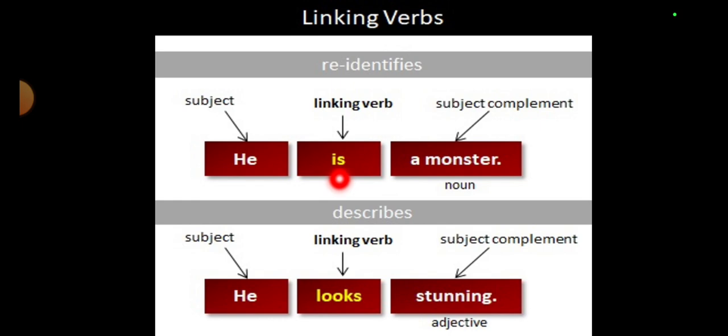Some linking verbs look like action verbs and have three forms, like: looks, looked, looked, looking. For example: 'He looks stunning.' Is there any action going on? No. It is just a complement — that he is stunning. The verb 'looks' is not performing any action; rather it is just linking 'he' with 'stunning,' that is the subject with the complement.